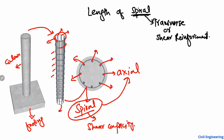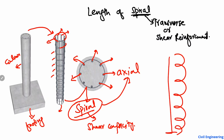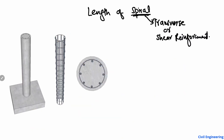So how can we find how much length of spiral is used? The spiral is used in this shape throughout the length of the column, and we want to find what the length of this spiral is given certain dimensions. Let me clean the screen. To find the length of the spiral, we are going to take some dimensions. For example, the height of the column — let's suppose this height is 8 meters.